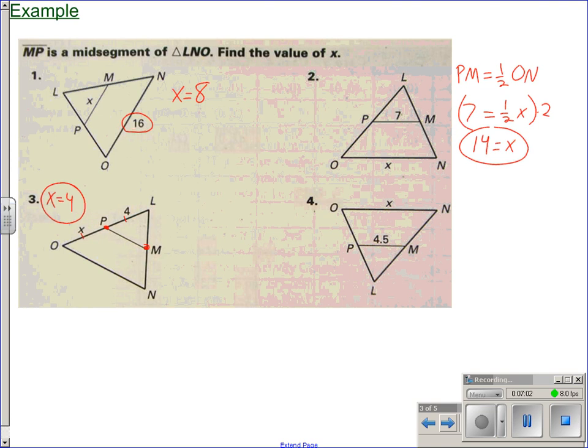Question number four is very much like question number two. X is that third side. Another way to think about it is, if you take the midsegment and multiply it by 2, you're getting the third side. X is 9.